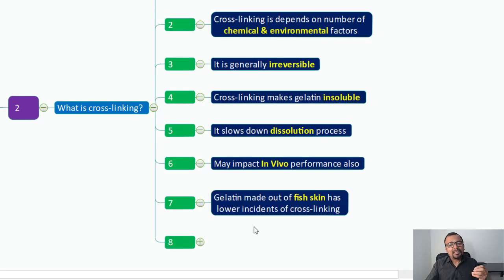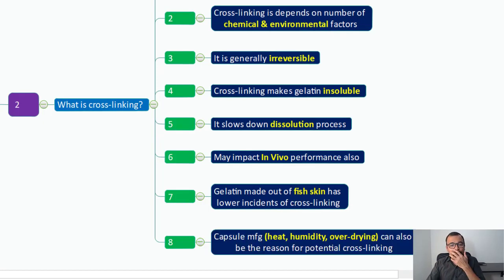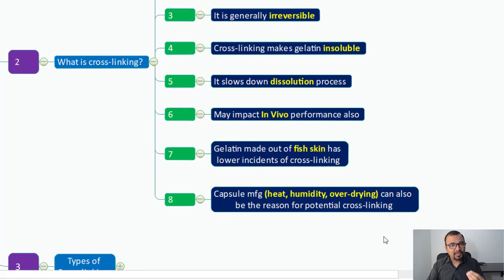Finally, gelatin made out of fish skin has lower incidences of cross-linking. This is a study which proved that if the source of gelatin is fish skin, then cross-linking is limited. But as gelatin is sourced from animal sources, you may not be able to actually understand the source of your gelatin, so it is very difficult to predict cross-linking formation. Capsule manufacturing can also induce the primary factor for the formation of gelatin. What is the heat, humidity, or drying that you have adopted during manufacturing of your hard gelatin capsule shells or soft gelatin capsule shells can also contribute to the formation of cross-linking.